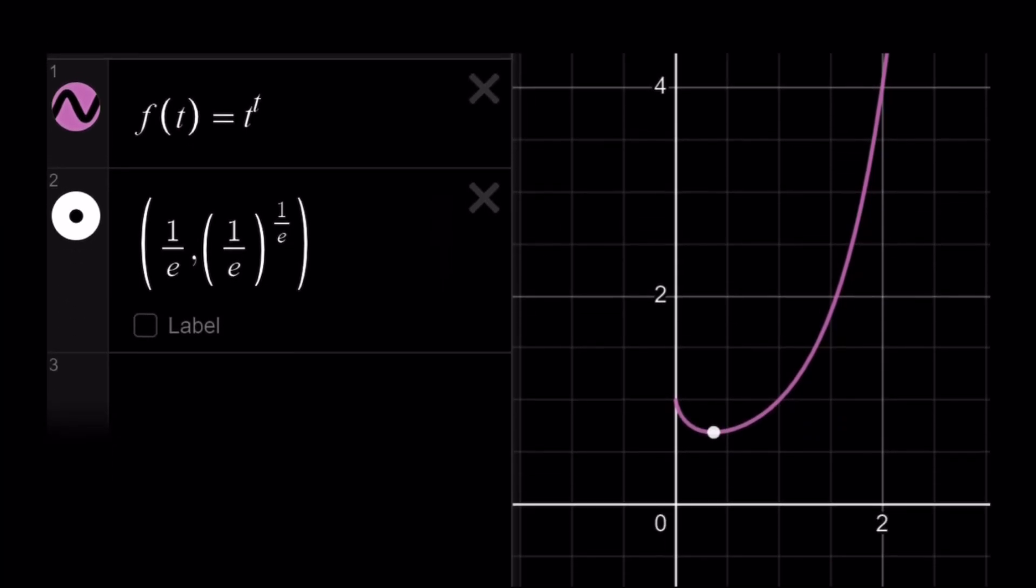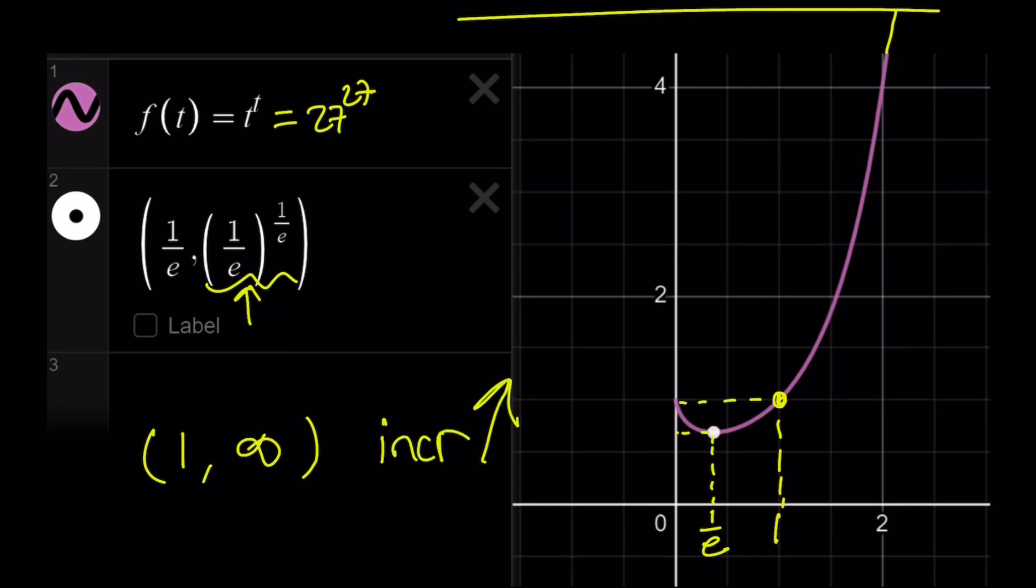Notice that this point is the minimum that we found, which is 1/e. Its y-coordinate is (1/e)^(1/e), some very irrational transcendental number. If you look at the y value, f(t), you want that to be 27^27. That's a very large number. When you draw a horizontal line, that's going to intersect the graph at a single point, because our graph is increasing on the interval 1 to infinity. That's why we're going to have a single solution.